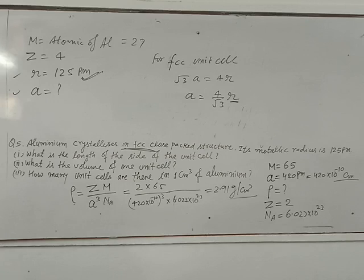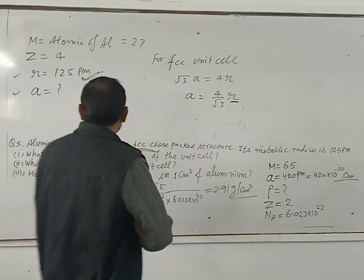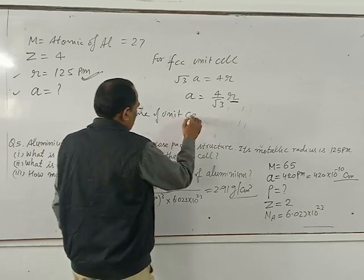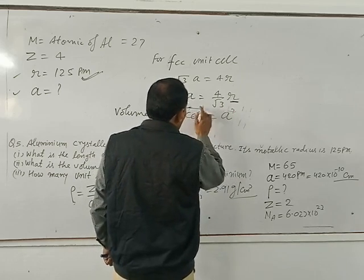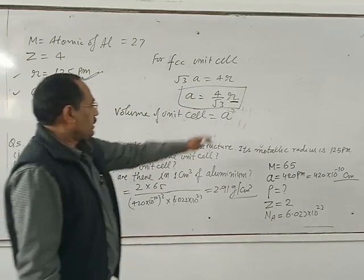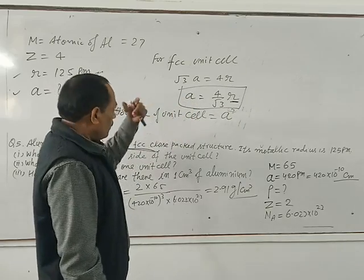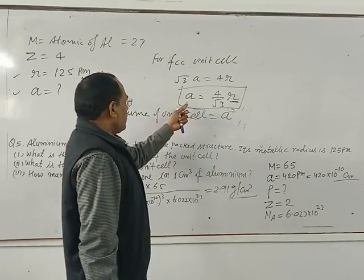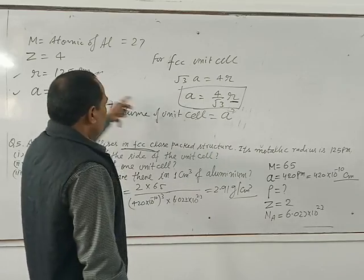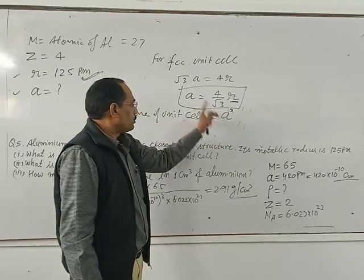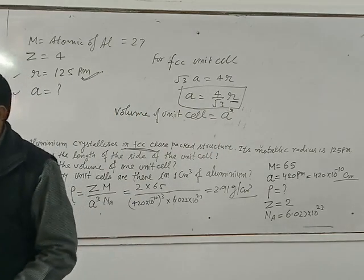We can calculate the value of A in picometers since R is given in picometers. If we convert R to centimeters, we get A in centimeters directly. After calculating the value of A, convert A to centimeters. The volume of the unit cell equals A cubed — substitute the value of A to find the volume of the unit cell.